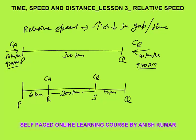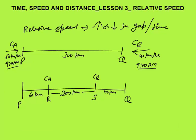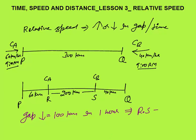How much gap is reduced in 1 hour? Earlier the gap between the two cars was 300 km. Now the gap is 200 km, so the gap reduced is 100 km. The gap reduced equals 100 km in 1 hour — that is your relative speed. So, relative speed is increase or decrease in gap per unit time, and the relative speed is 100 km per hour.